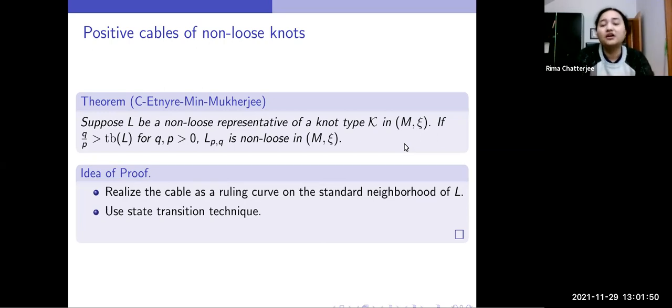The state transition technique has been used before by Etnyre and Honda in several of their papers. And by using this technique, we actually prove that if the cable is loose, if you start with this assumption that the cable is loose, then by using the state transition technique, we reach this contradiction that the knot we started with is also loose. And that's very briefly the idea of the proof.